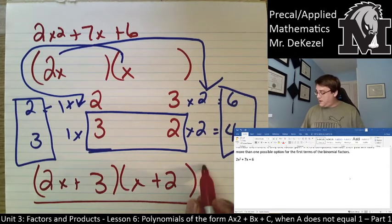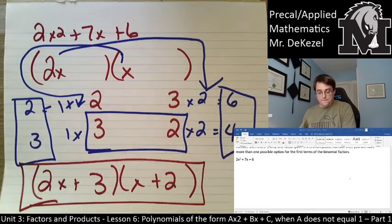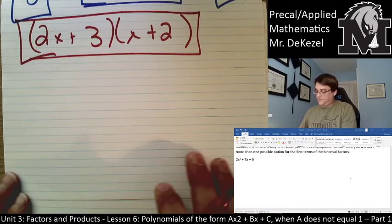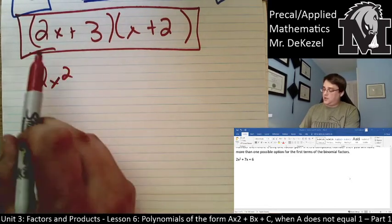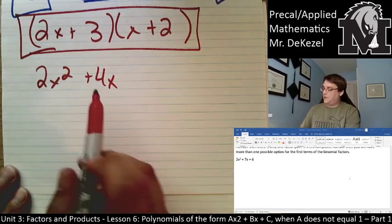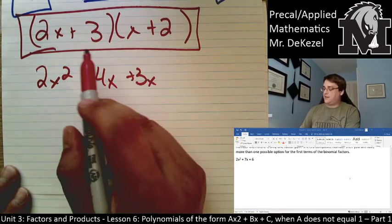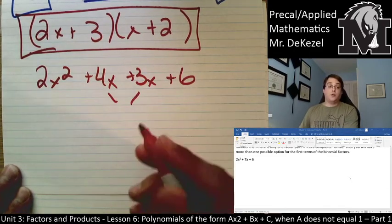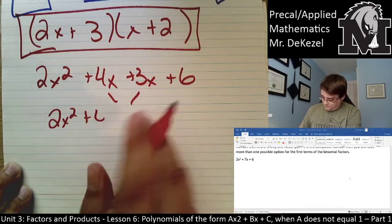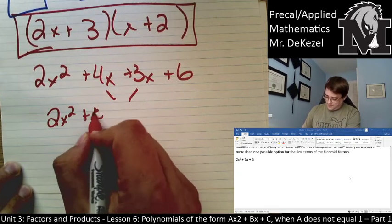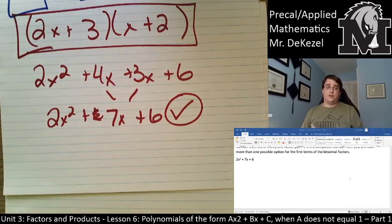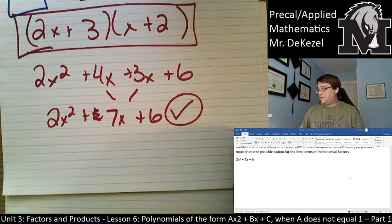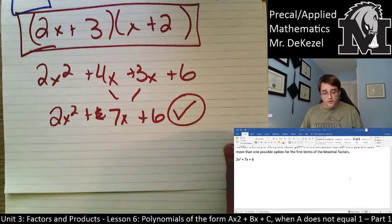I'm going to put a box around it because I'm fairly confident. Let's check: 2x times x is 2x squared. 2x times 2 is plus 4x. 3 times x is plus 3x. And 3 times 2 is plus 6. Combining like terms: 2x squared plus 7x plus 6. That is what we started with, which means that is the correct way to factor it. If you have questions, leave them in the comments.